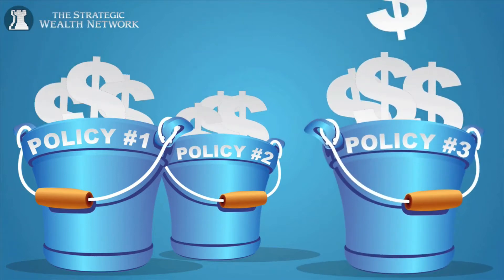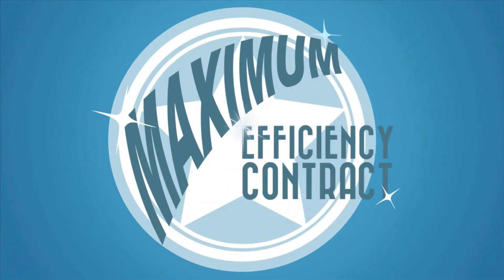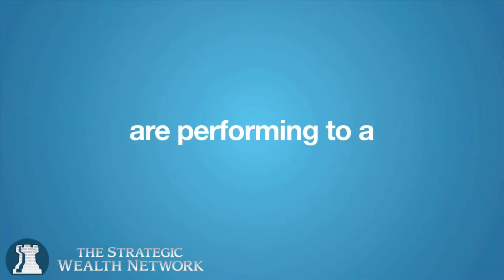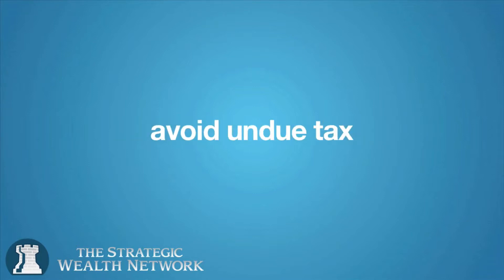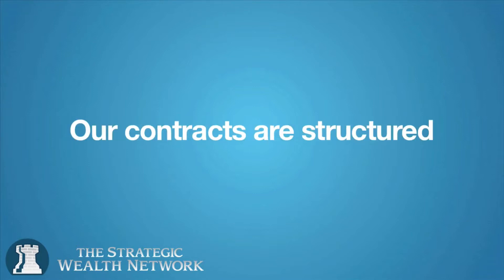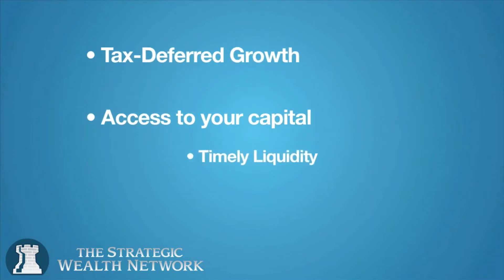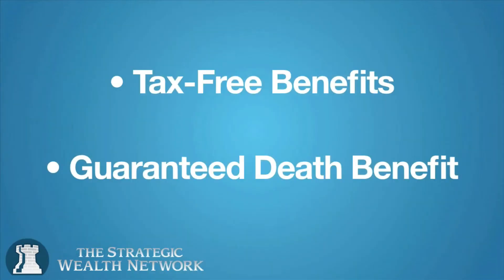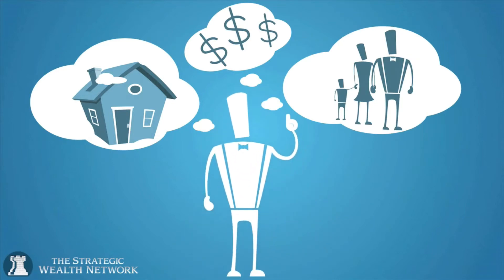We currently have clients that are enjoying the benefits of multiple reserve capital accounts. We prefer to structure our accounts as maximum efficiency contracts that try to avoid all future tax consequences. This means that the accounts we structure are performing to a maximum standard that gives the contract owner maximum benefits while attempting to avoid undue tax. Our contracts are structured to include at least tax-deferred growth, access to your capital and timely liquidity options, along with tax-free distributions during retirement plus guaranteed death benefit. Now that we understand what our expectations for each of your contracts should be, let's talk about contract design.